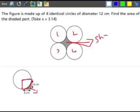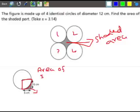So what is the formula? Area of square minus area of quadrant.